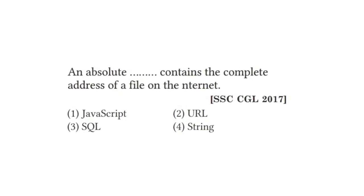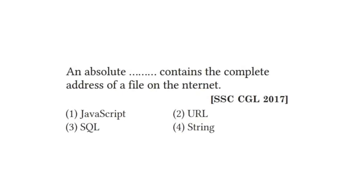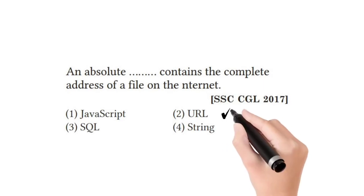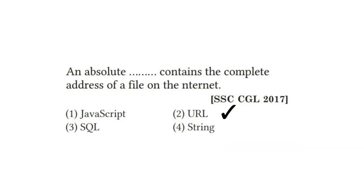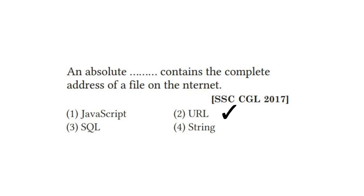An absolute URL contains the complete address of a file — that is our URL, which contains all the information present.